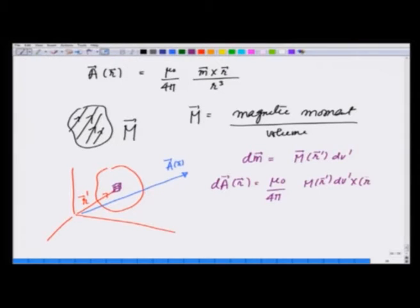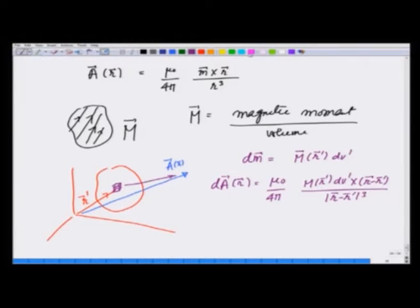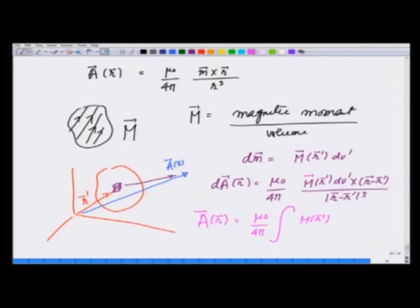So this is going to be mu_0 over 4pi times M(r prime) dv prime cross (r minus r prime), where (r minus r prime) is the vector from that source point to the field point, divided by |r minus r prime| cubed. Therefore the vector potential A at r is mu_0 over 4pi times the integral of M(r prime) cross (r minus r prime) over |r minus r prime| cubed dv prime.